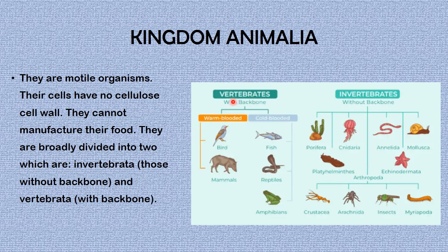As shown in the picture, we have vertebrates — those with a backbone — including warm-blooded animals like birds and mammals, and cold-blooded animals like fish, reptiles, and amphibians. Under invertebrates — animals without a backbone — we have porifera, cnidaria, annelida, mollusca, echinodermata, arthropoda, and platyhelminthes. Under arthropoda we have crustacea, arachnida, insects, and myriapoda. In another video we will discuss kingdom Animalia and their phyla in detail.